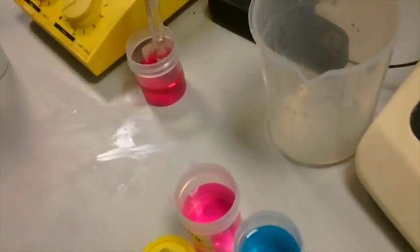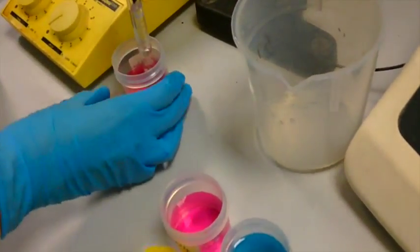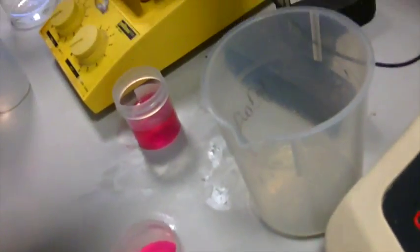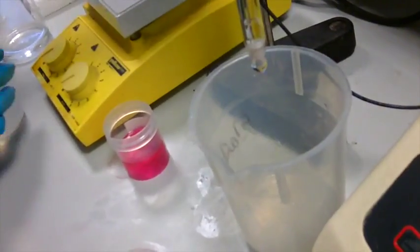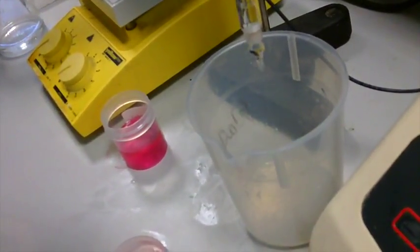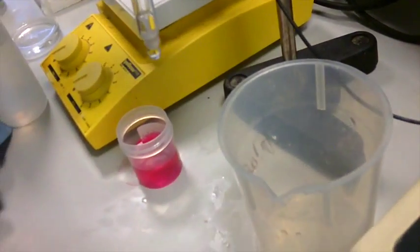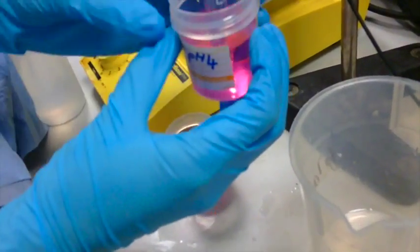Before you measure your pH solution, it has to be calibrated. In order to do this, the probe is removed from the storage solution, washed briefly with water into a waste bucket and then dried with a piece of tissue. It is then inserted into the pH 4 solution.